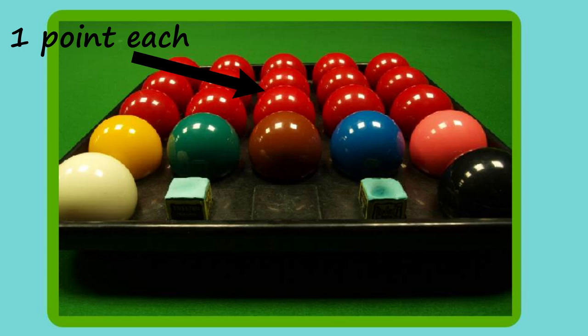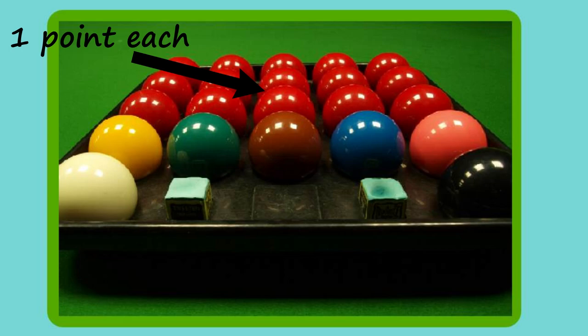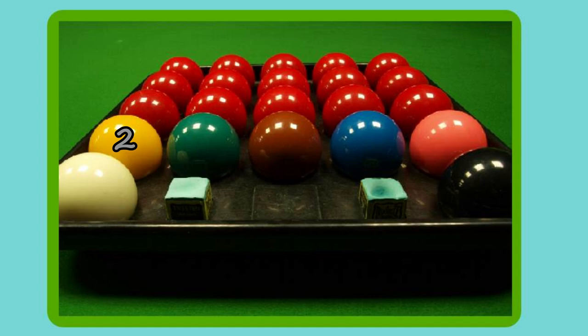The object of snooker is to score the most points at the end of each game, called a frame. Players earn points by pocketing balls of different values. There are fifteen red balls, each worth a single point. The yellow ball is worth two points, the green ball is worth three, the brown is four, five points for the blue, six for the pink, and sinking the black ball gives the player seven points. The total number of consecutive points, excluding fouls, that a player amasses on one visit to the table is known as a break. Penalty points are awarded to a player when their opponent commits a foul.